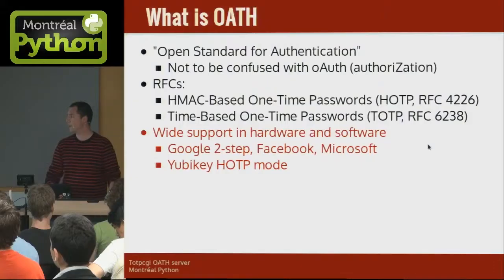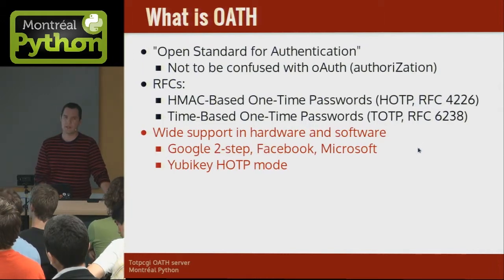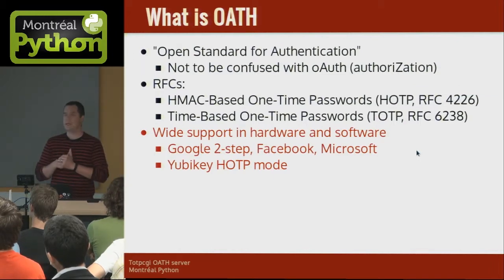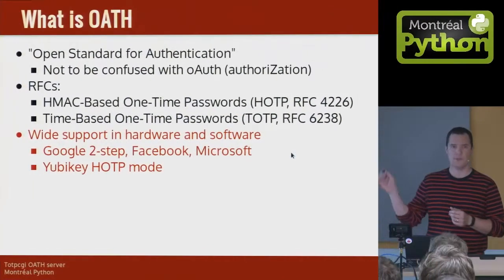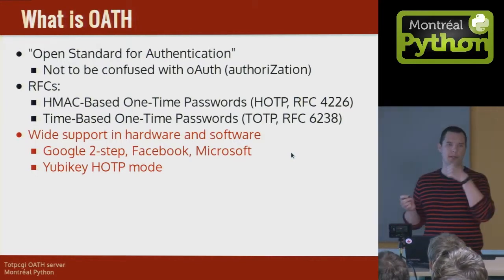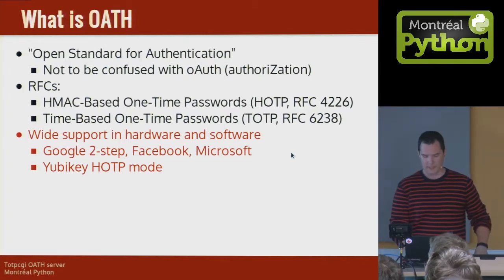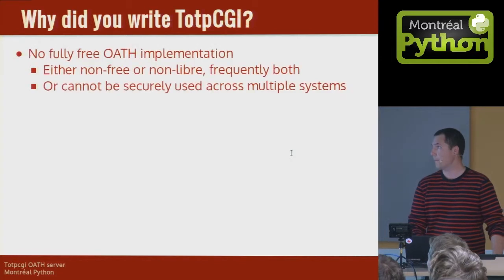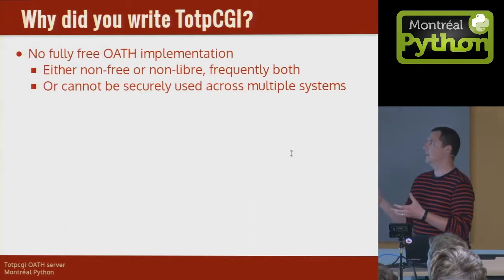There's wide support in hardware and software. Google Two-Step uses TOTP. Facebook Verify also has six digits and uses TOTP. Microsoft even uses TOTP. HOTP is used by a number of devices — YubiKeys, if you've ever seen them, are cute little devices. You plug them into your laptop, there's one big button that you press, and it acts like a keyboard and sends a set of keystrokes, which is really clever. So why did we write TOTP-CGI? It's actually pronounced Tupi-CGI after Tupi and Beano. Don't ask.